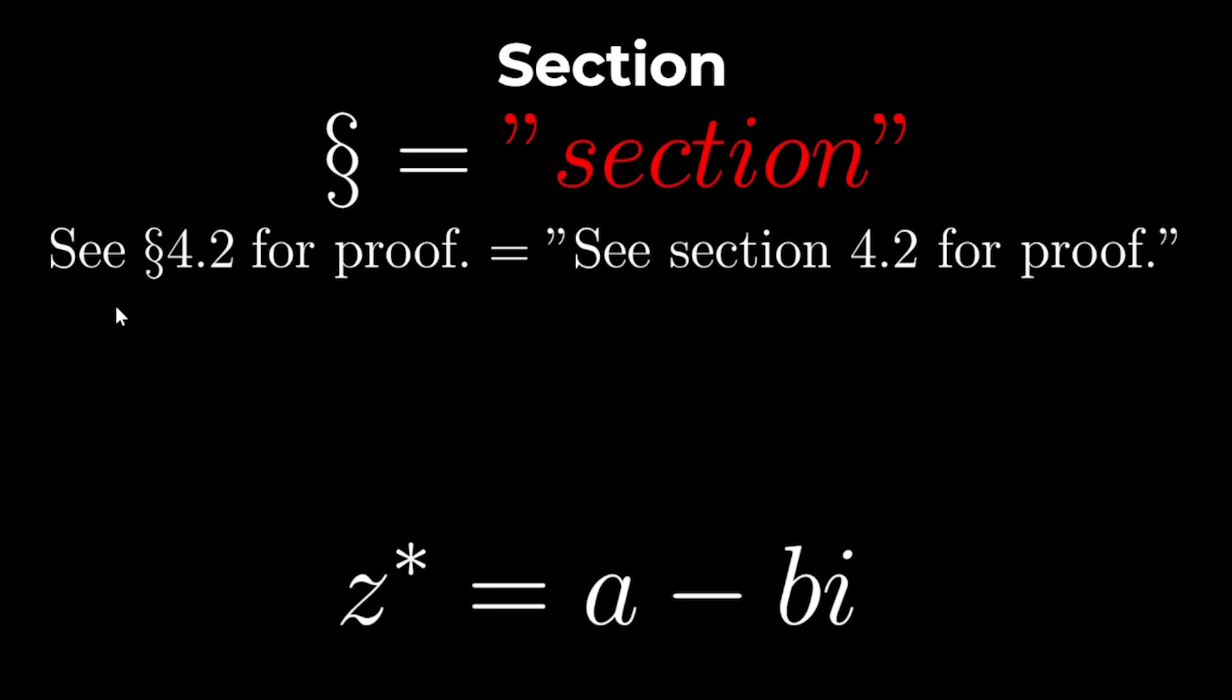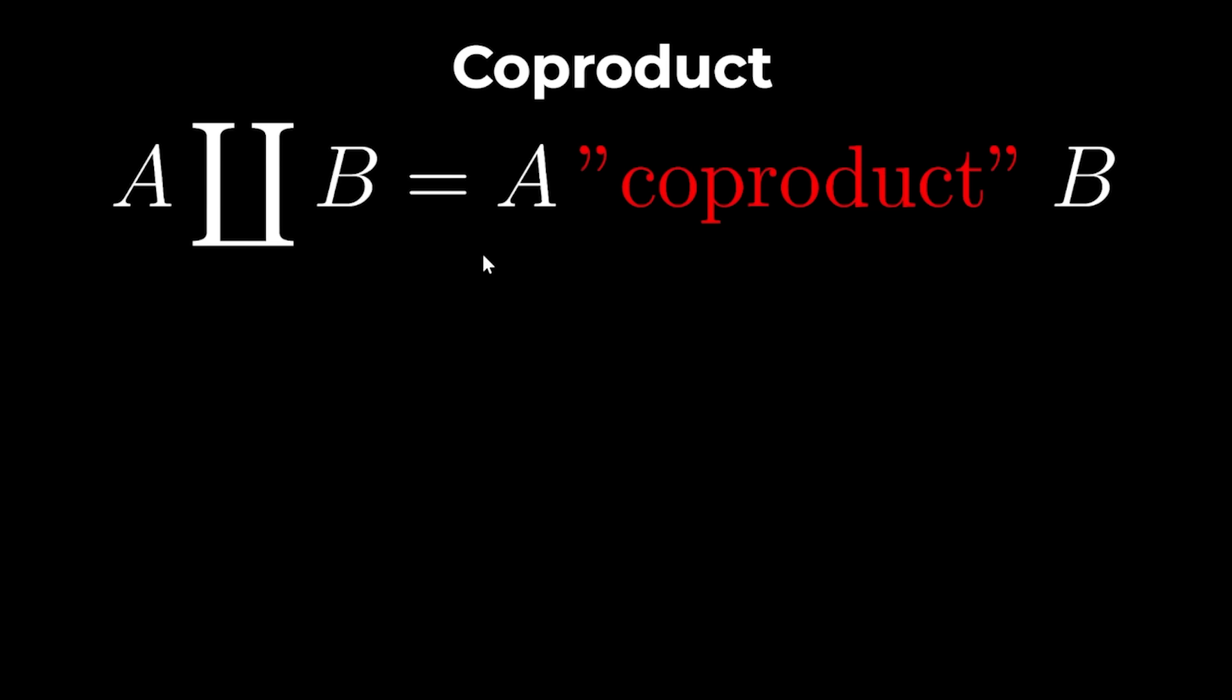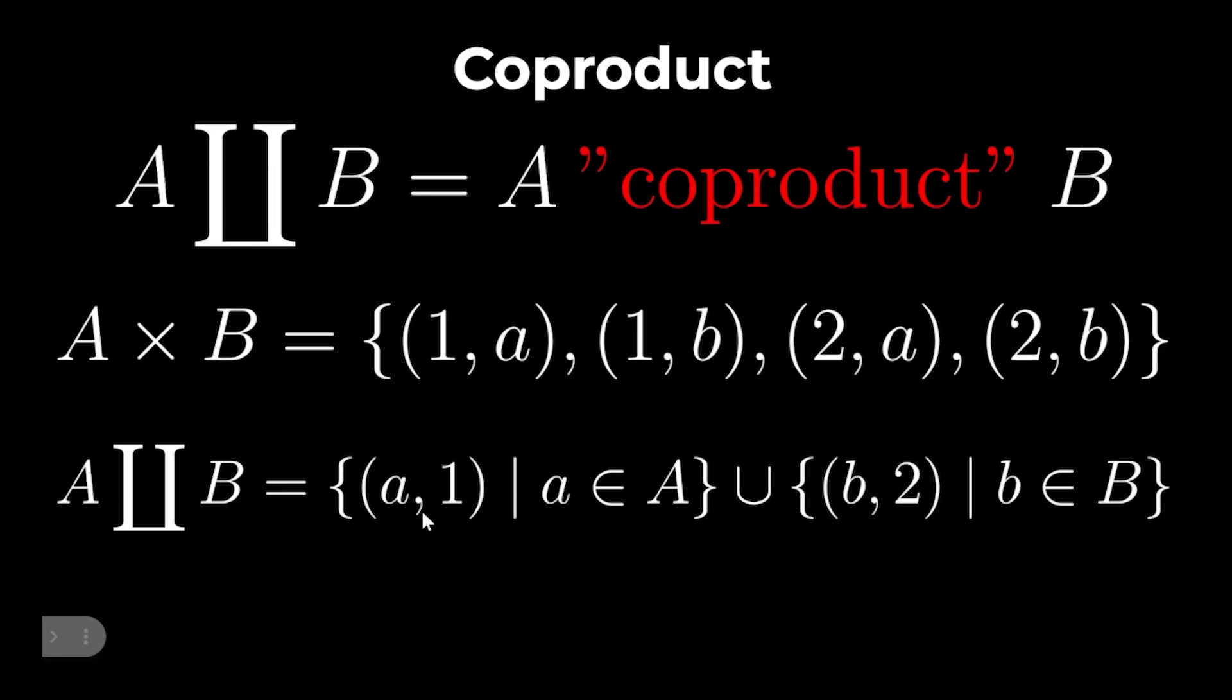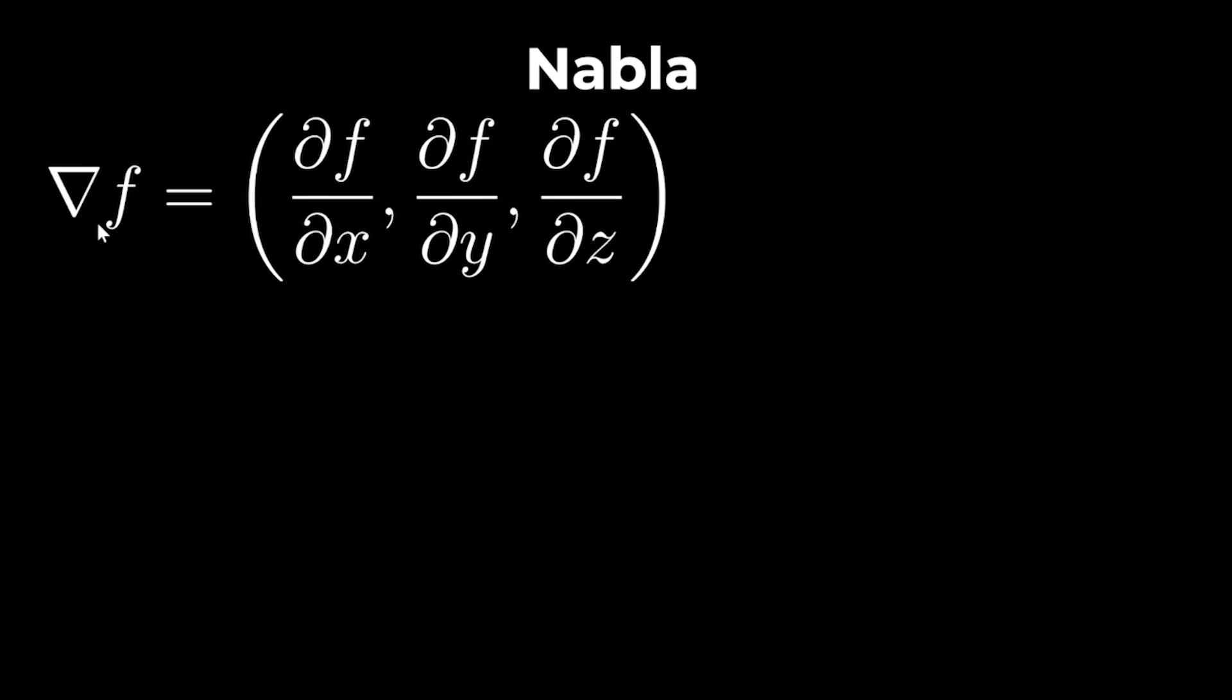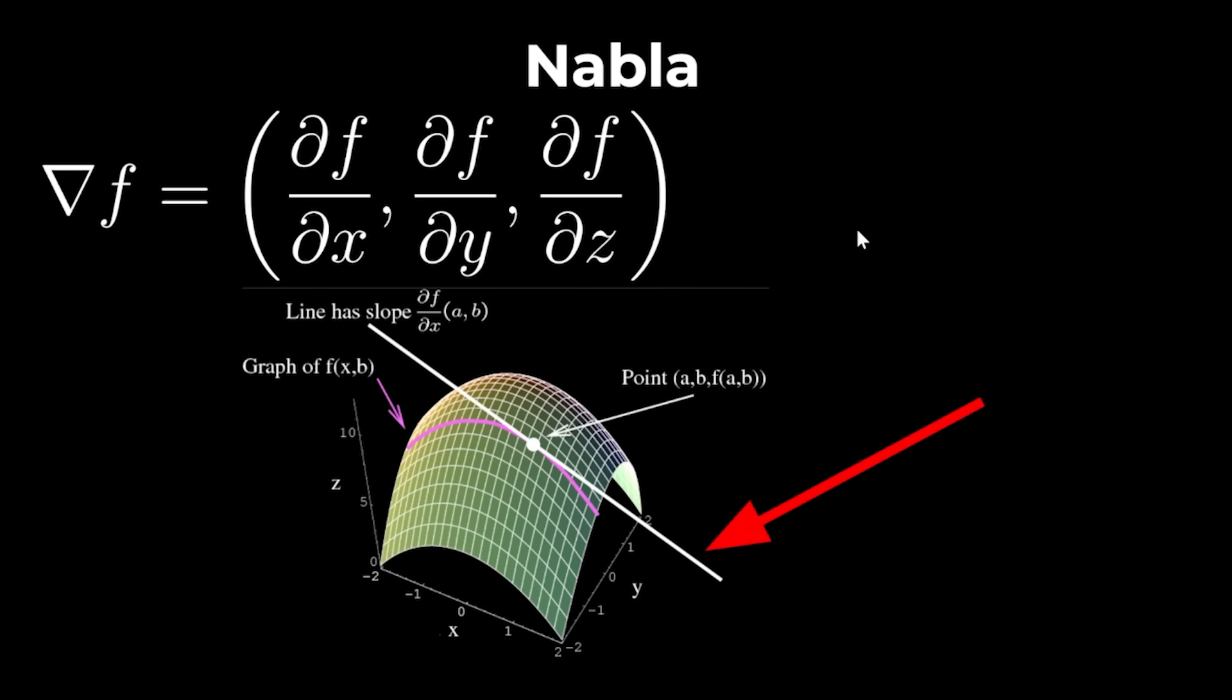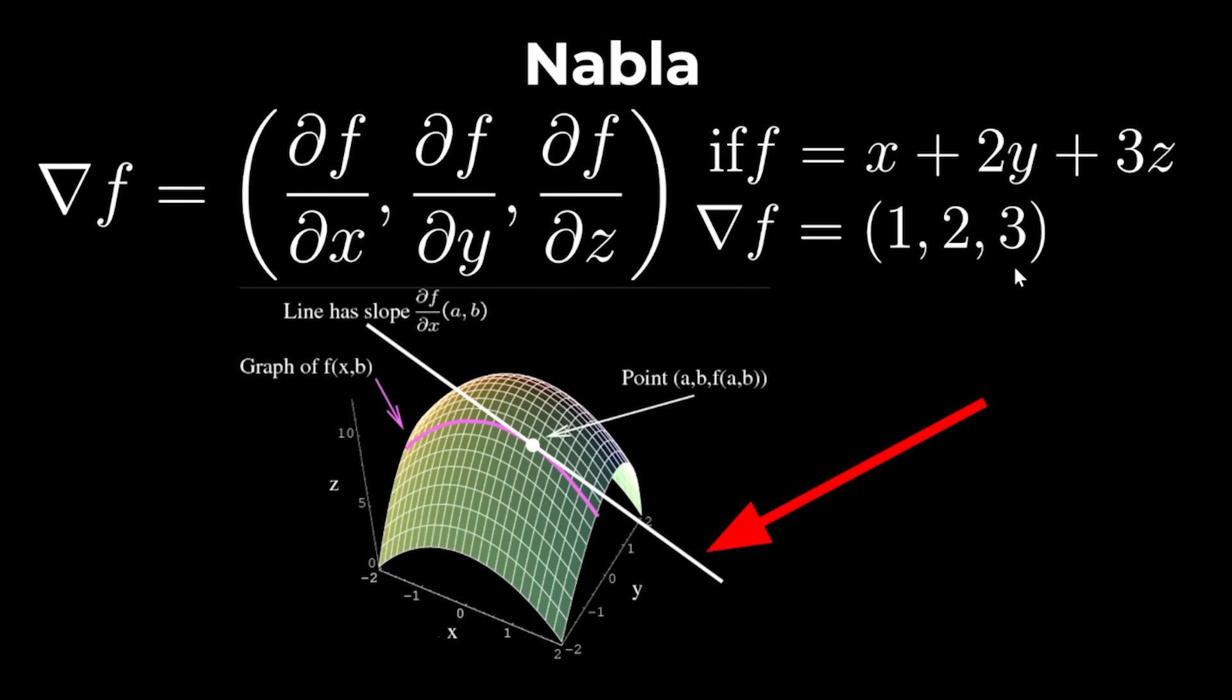This funny symbol just means section. For example, see section 4.2 for proof. And if z equals a plus bi, then the conjugate of z equals a minus bi. Core product is the opposite of the Cartesian product. So if the Cartesian product joins the elements of a and b together, then the core product keeps them disjoint. Nabla is used to denote the gradient of a function as a vector, which points at the direction of steepest increase in that part of the function. So if f equals x plus 2y plus 3z, then Nabla f equals 1, 2, 3.